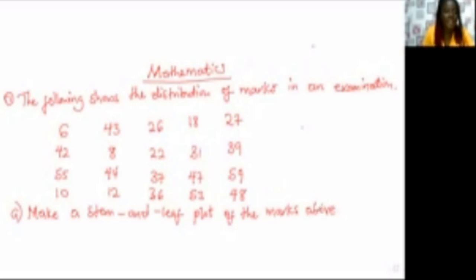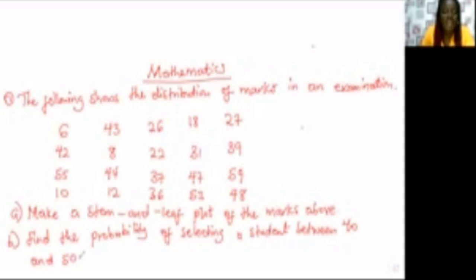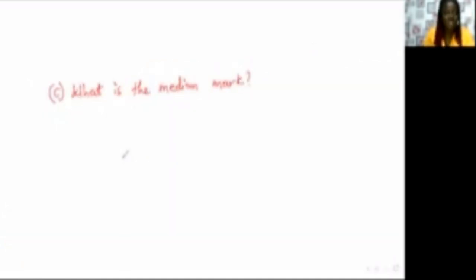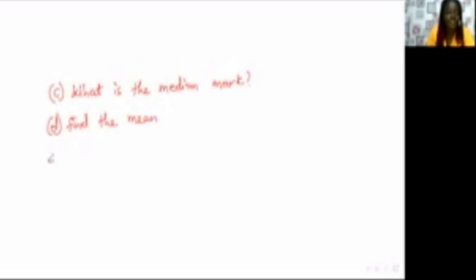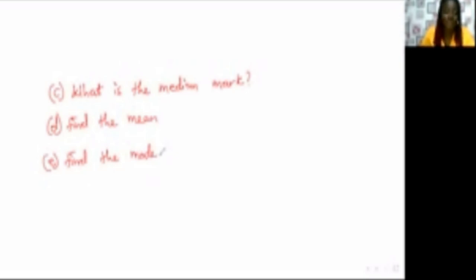Now the first question B: find the probability of selecting a student between 40 and 50. C: what is the median mark? D: find the median. E: find the mode. So these are the likely possible questions that can come under a stem and leaf plot. Let's take them one after the other.